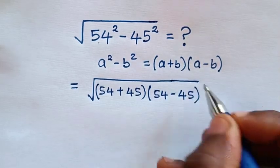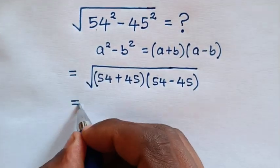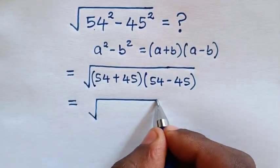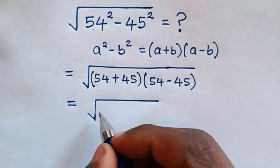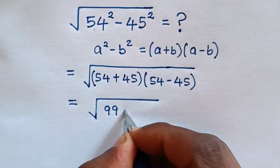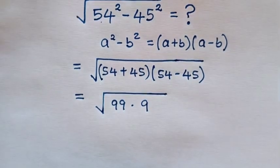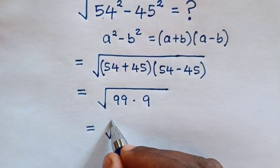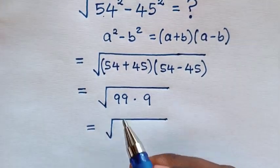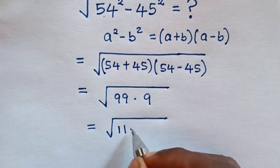This equals square root of 54 plus 45 is 99, times 54 minus 45 is 9. So it will equal square root of 99, which is the same as 11 times 9.